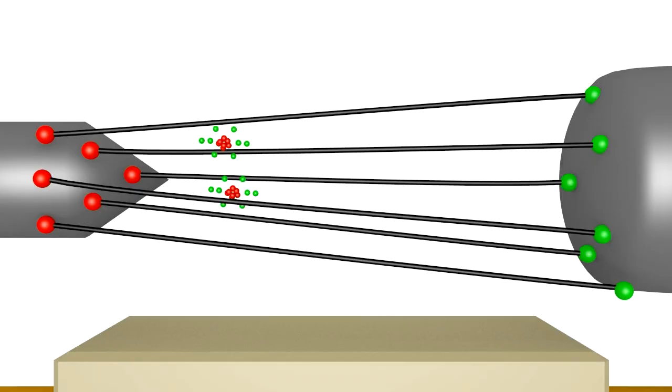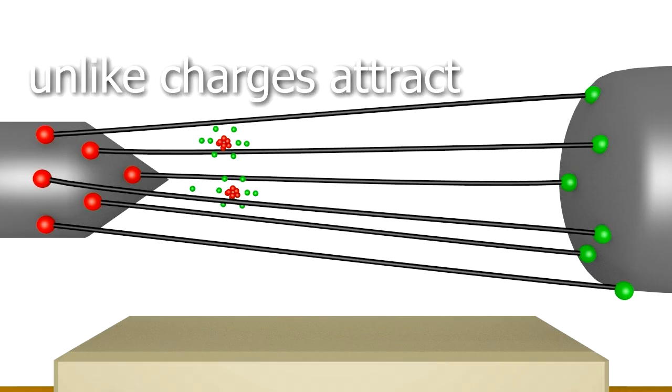But there are other atoms involved too, the atoms in the air between. Those atoms also contain positive protons and negative electrons. The electric field is so strong here that it can pull electrons from an atom. The direction the electron moves is determined by the polarity of the charges. Unlike charges attract each other, so the negative electron is attracted towards the positively charged object.